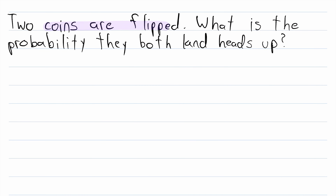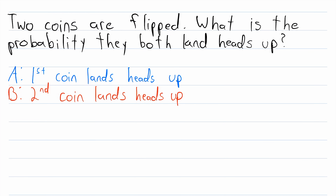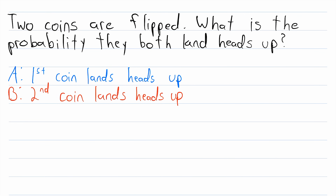Two coins are flipped. What is the probability that they both land heads up? We'll name some events here. We'll say that A is the event that the first coin lands heads up, and B is the event that the second coin lands heads up. We're trying to find the probability that they both land heads up, which is the probability of A and B, which you might also see written as the probability of A intersect B.